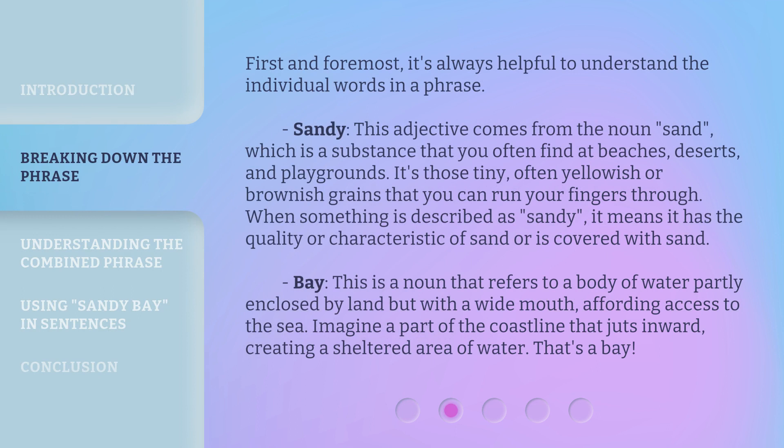First and foremost, it's always helpful to understand the individual words in a phrase. Sandy. This adjective comes from the noun sand, which is a substance that you often find at beaches, deserts, and playgrounds. It's those tiny, often yellowish or brownish grains that you can run your fingers through. When something is described as sandy, it means it has the quality or characteristic of sand or is covered with sand.